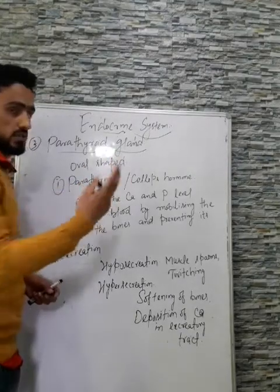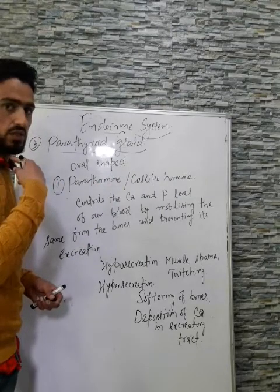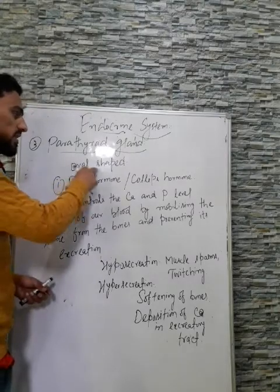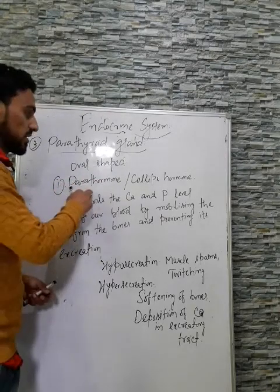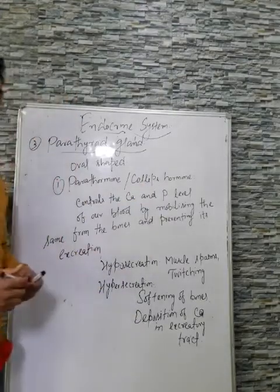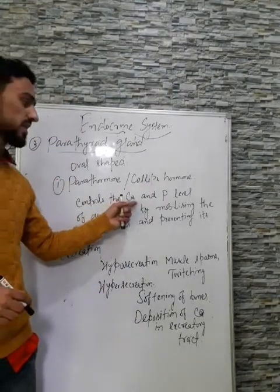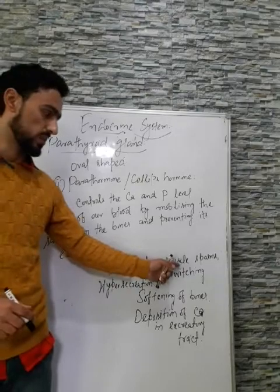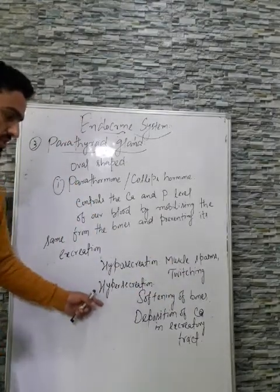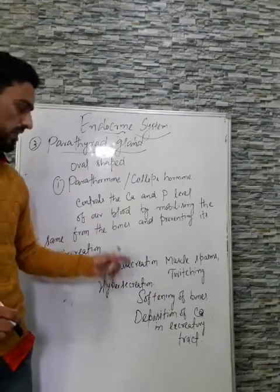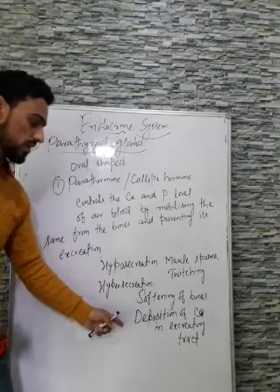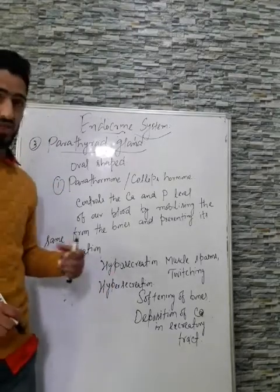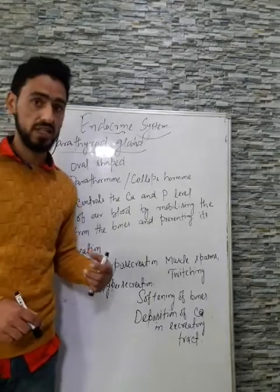Quick recap of the parathyroid gland: it is located in the neck, with two pairs of glands present at the back side of the thyroid gland. They are oval-shaped and secrete parathormone (collip's hormone), which maintains calcium and phosphorus levels in the blood. Hyposecretion results in muscle spasms and twitching; hypersecretion leads to softening of bones and calcium deposition in the urinary/excretory tract.